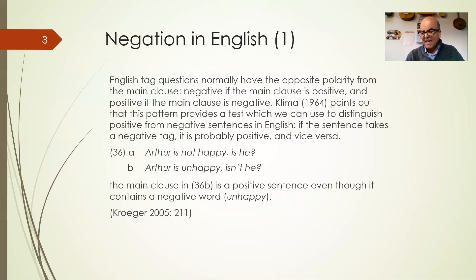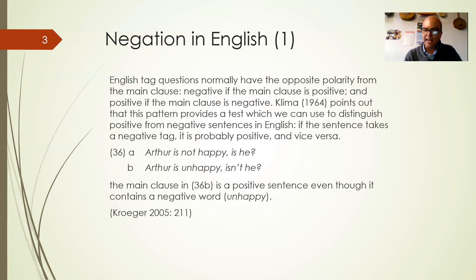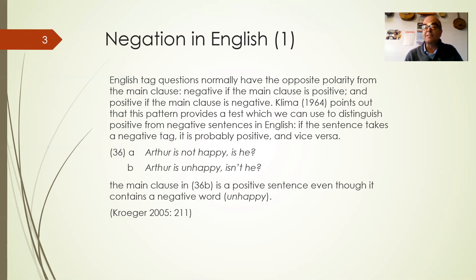The examples numbered here come from an old version of the slides. 'Arthur is not happy' — that is a negative sentence, and therefore the tag question that goes with it will be 'is he?' — 'Arthur is not happy, is he?' Whereas if it's a positive sentence, 'Arthur is unhappy,' you have to have a negative tag: 'isn't he?' The significant thing here is that although 'Arthur is unhappy' has a negative meaning, the sentence is still positive because it does not have 'not.'